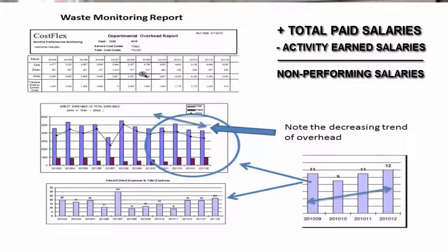Follow the overhead line. If the overhead line is trending down, the department manager has found a way to reduce labor waste. And if labor waste is reduced, patient costs are reduced as well.